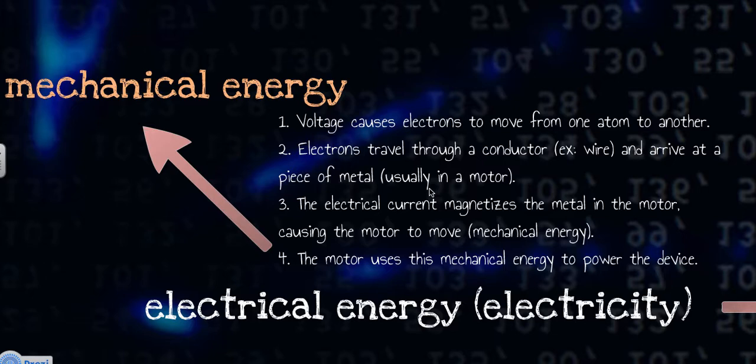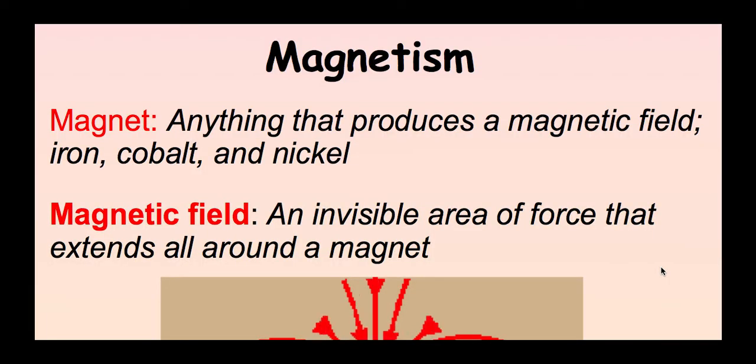So we went through these four steps, and the major part of this was actually magnetism. So we didn't talk too much about that yet. In this video, we're going to talk more about how magnetism and electricity are related. So before we discuss how magnetism and electricity are related, first we need to define exactly what a magnet is and a magnetic field.